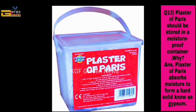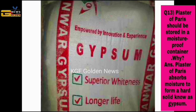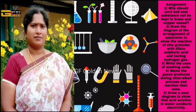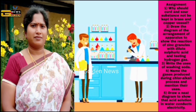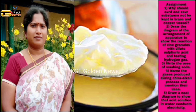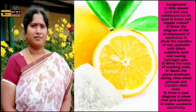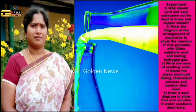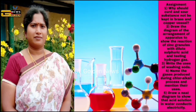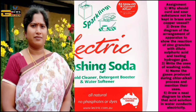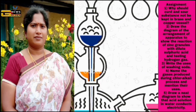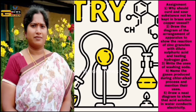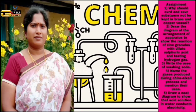Plaster of Paris absorbs moisture to form a hard solid known as gypsum. Children, here are some important questions as home assignment in the examination point of view. First: why should curd and sour substances not be kept in brass or copper vessels? Question: draw the diagram of the arrangement of apparatus to know the reaction of zinc granules with dilute sulfuric acid and testing hydrogen gas. Write the uses of washing soda. Name the gases produced during chloralkali process and mention their uses. Draw a neat diagram to show that acid solution in water conducts electricity.